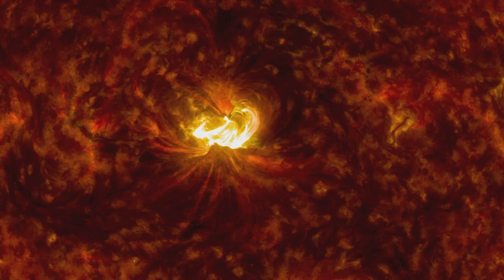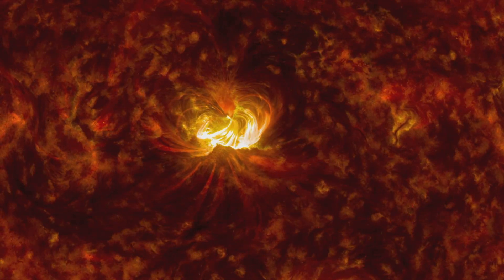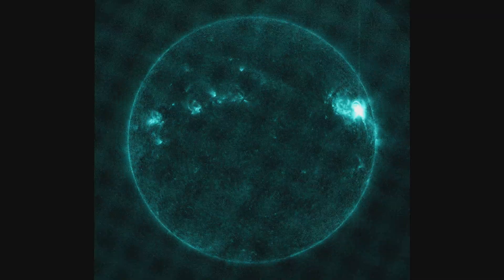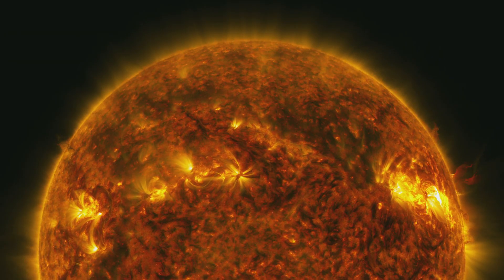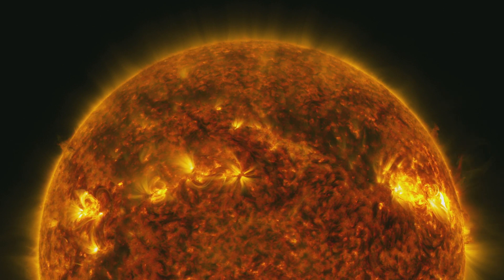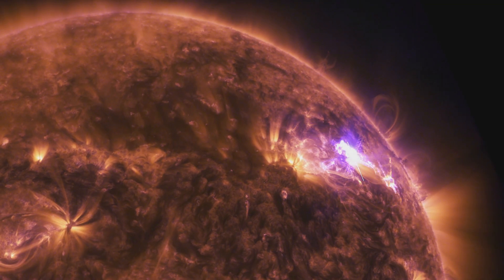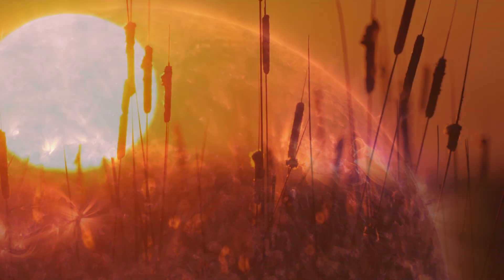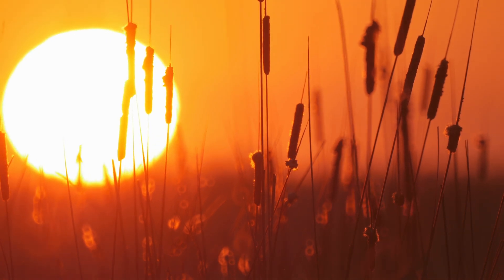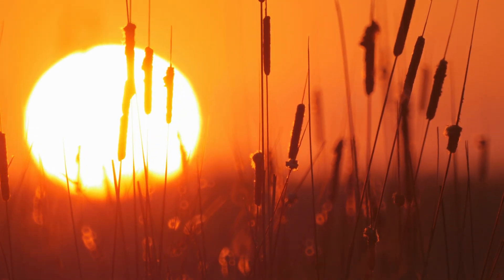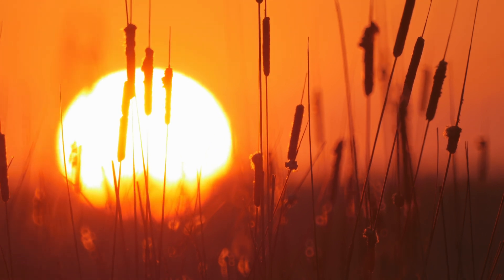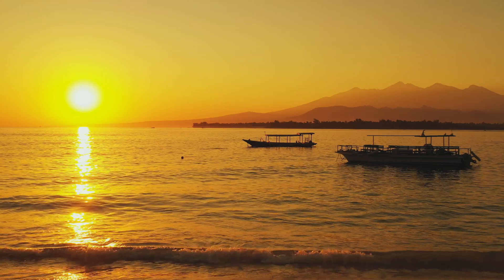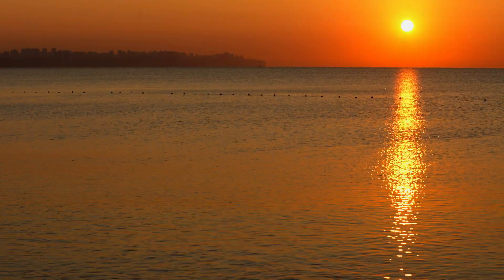Solar cycle 25 is now showing signs of life. What happens on our sun affects radio propagation around the world. Solar indices are a measure of activity on the sun. These indices can be used by amateur radio operators to get a sense of how radio signals will propagate globally and when to expect a radio blackout.